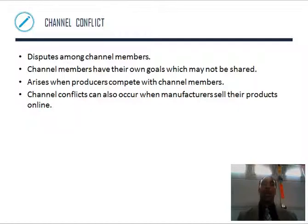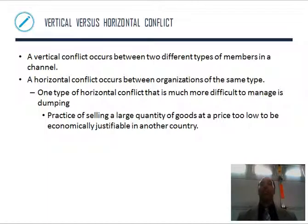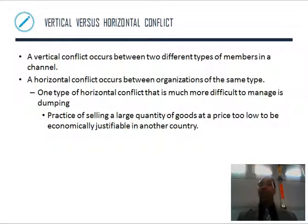Channel conflict — disputes among channel members. Channel members have their own goals, which may not be shared. Conflicts arise when producers compete with channel members — for example, selling on my website while also giving goods to a brick-and-mortar department store. Channel conflicts can also occur when manufacturers sell their products online. Vertical conflict occurs between two different types of members in a channel — like trucking and packaging companies that don't get along. Horizontal conflict is between organizations of the same type — one form is dumping: taking a product to another country and selling it very cheaply just to get rid of it, a practice of selling large quantities at a price too low to be economically justifiable.